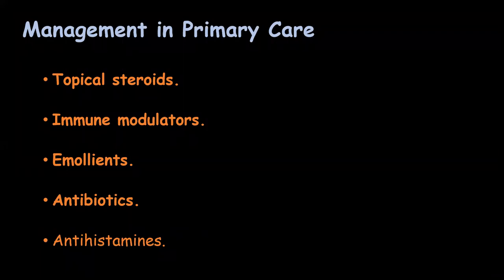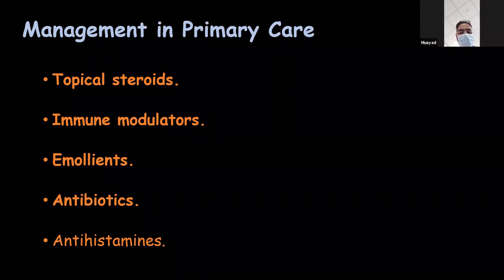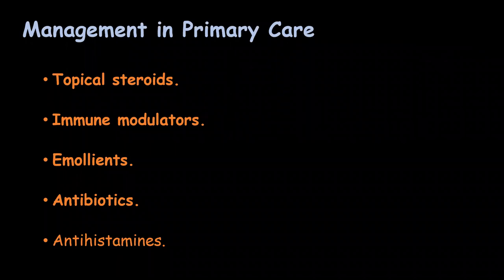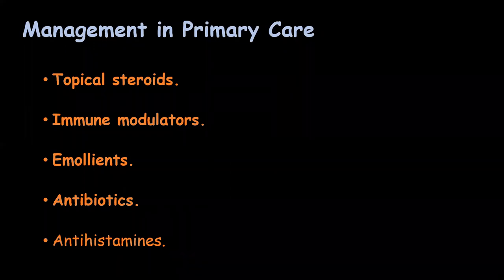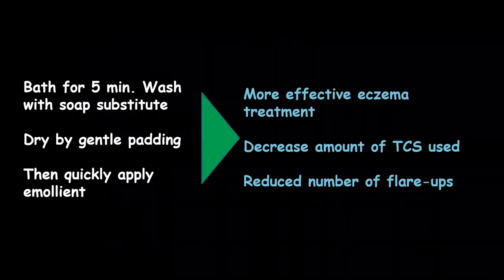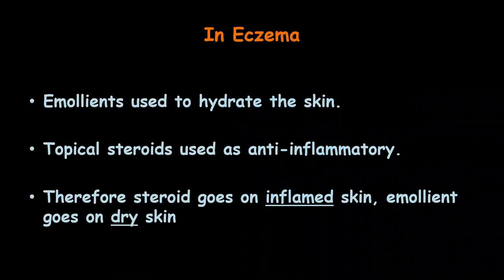So what would we do in primary care to treat eczema? The most important treatments are topical steroids and emollients. Emollients are something to moisturize the skin. We sometimes use immune modulators and antibiotics, but very rarely do we use antihistamines. Moisturizers are very important — we advise maybe a bath, five minutes in the bath daily, with a moisturizer as a wash, no soap and no shampoos in the bath. This is very effective treatment.